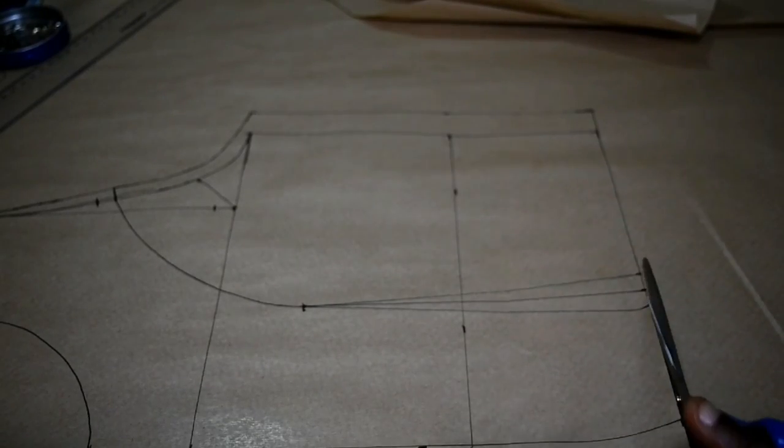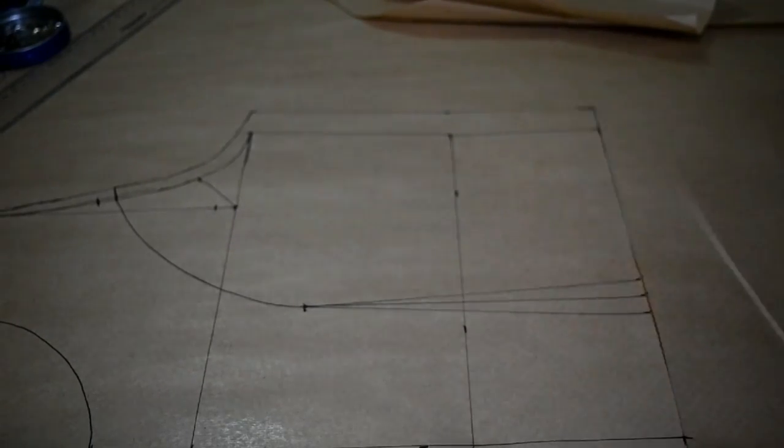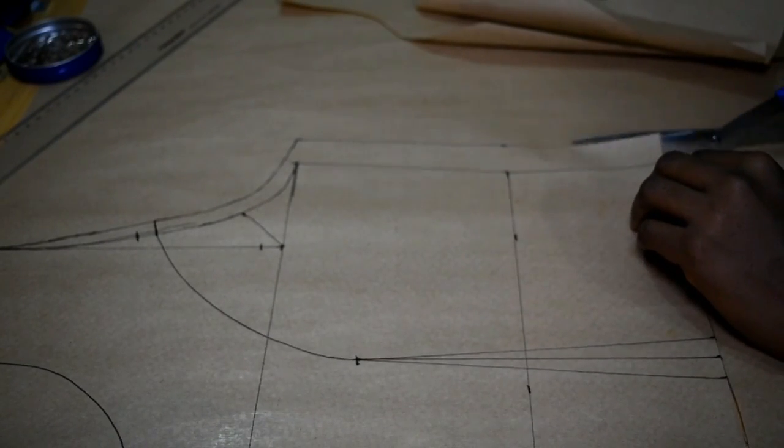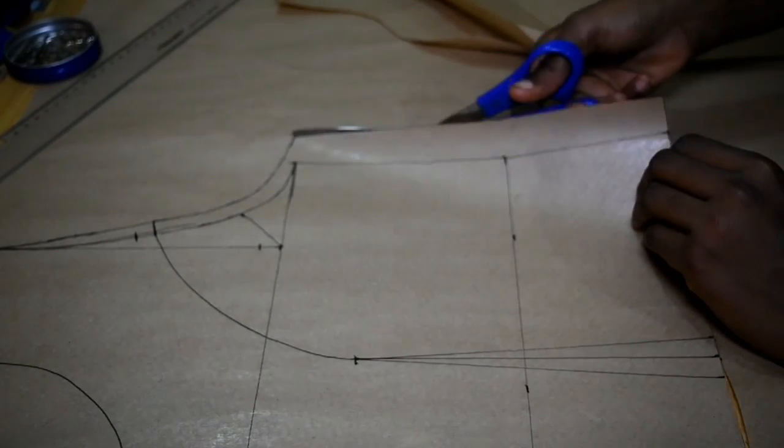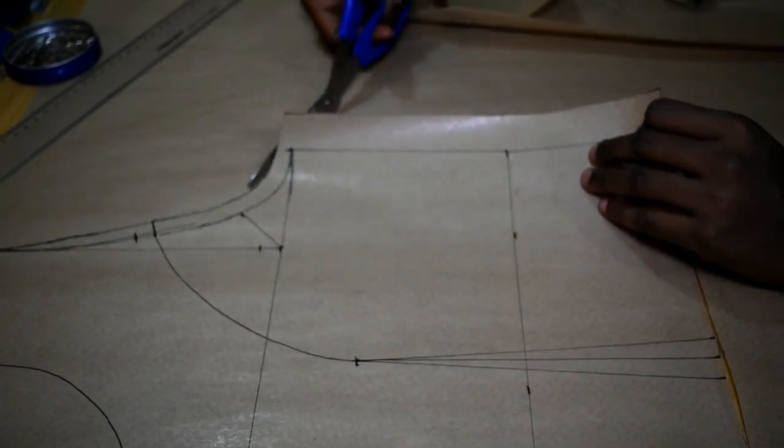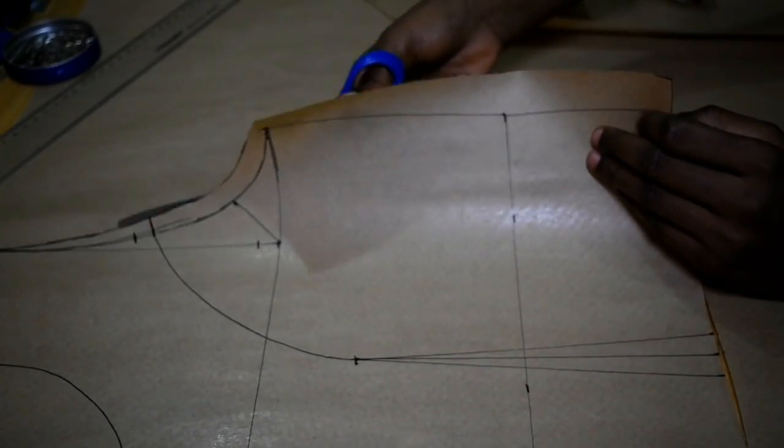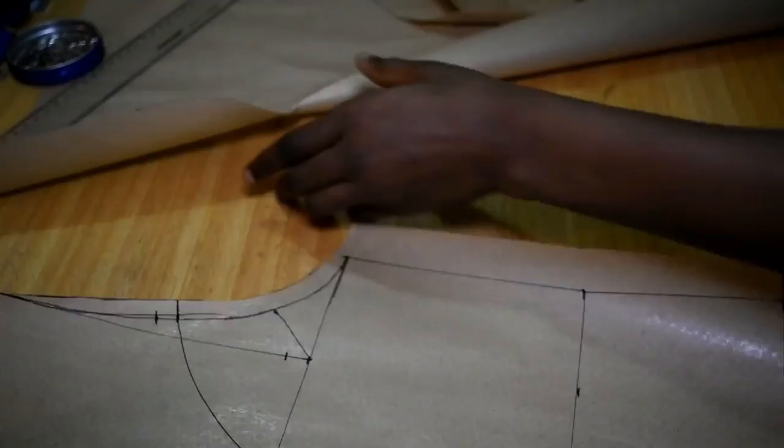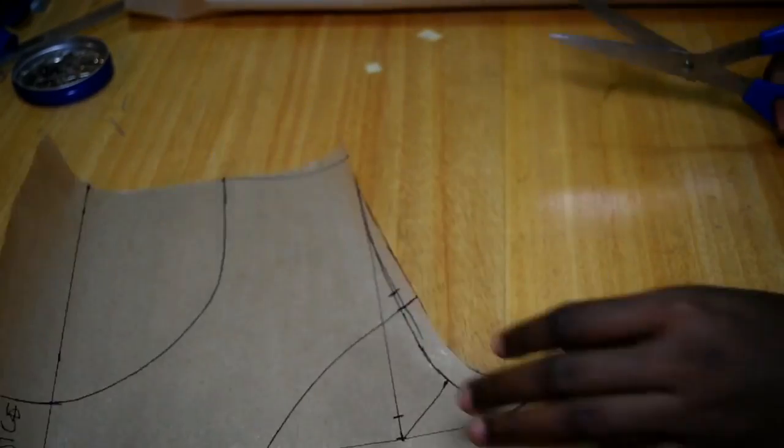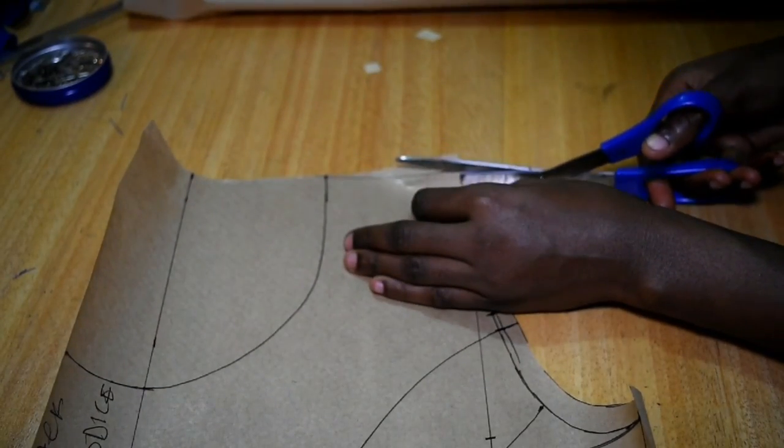So for princess seam that is generally cut out and then the piece is sewn back together. Like I said, this is very simple compared to your front bodice.